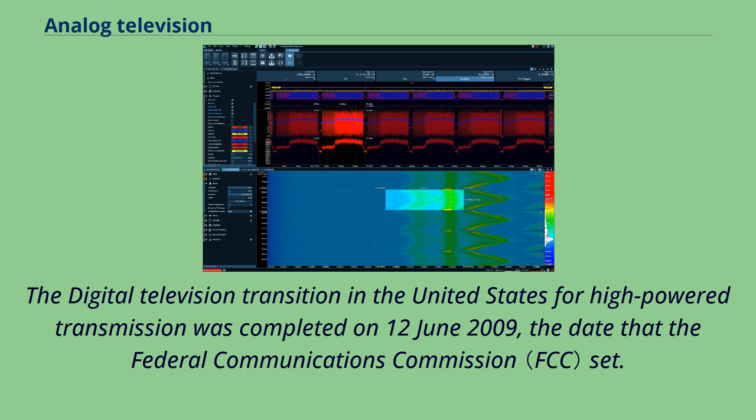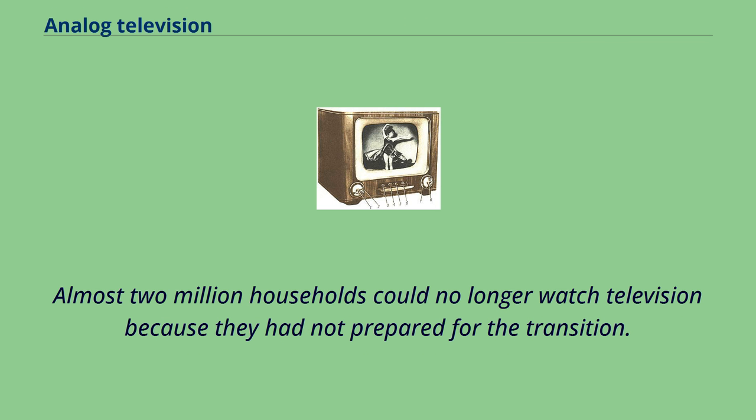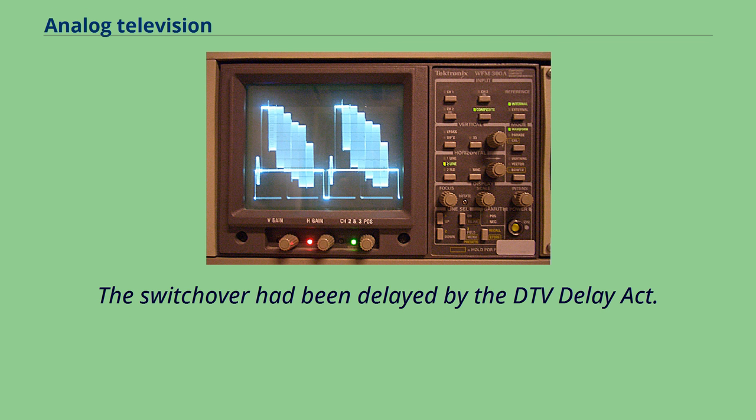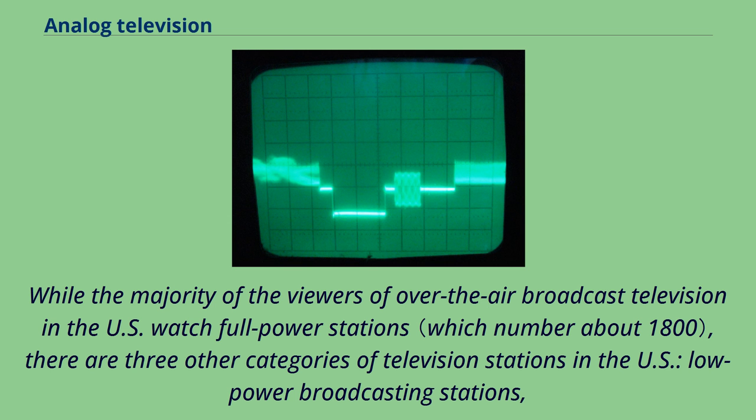In Japan, the switch to digital began in northeastern Ishikawa Prefecture on July 24, 2010 and ended in 43 of the country's 47 prefectures on July 24, 2011. But in Fukushima, Iwate, and Miyagi Prefectures, the conversion was delayed to March 31, 2012, due to complications from the 2011 Tohoku earthquake and tsunami and its related nuclear accidents.